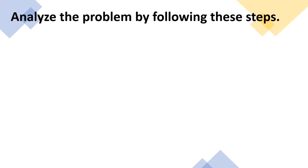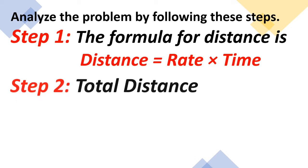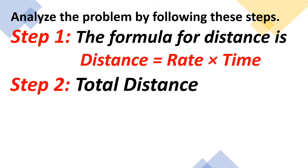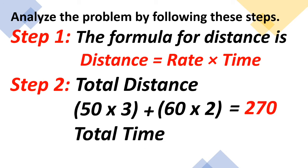Let us analyze the problem by following these steps. The first one is the formula for distance is distance equals rate times time. So let us get the total distance. We have 50 times 3 plus 60 times 2, and we got the answer 270. About the total time: we have 3 plus 2 is equal to 5.